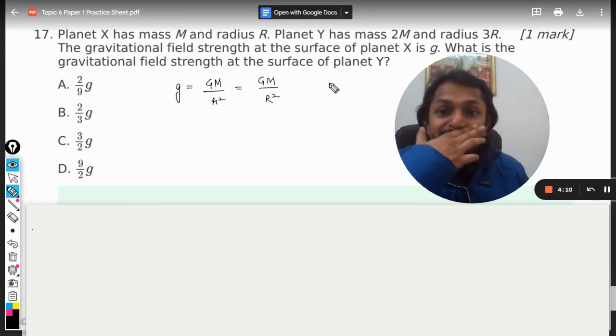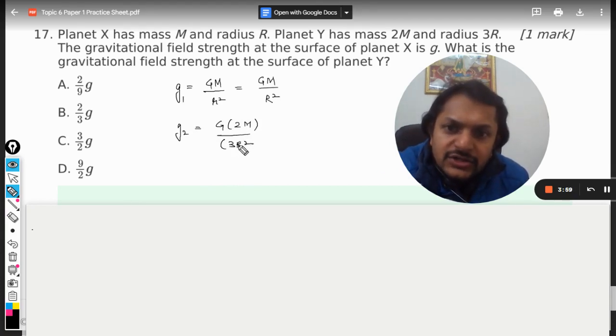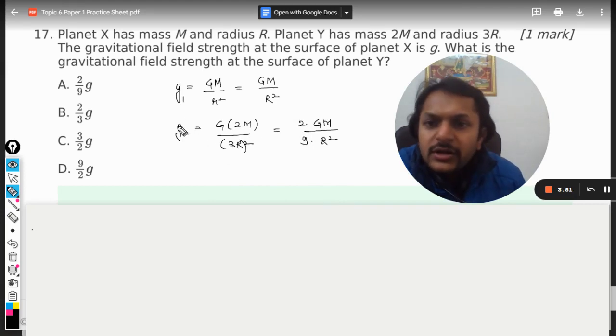So this is g. And what about g2? g2 will be, mass is taken as double and radius is now three times, so it will be 2GM divided by 9R². This is g dash.